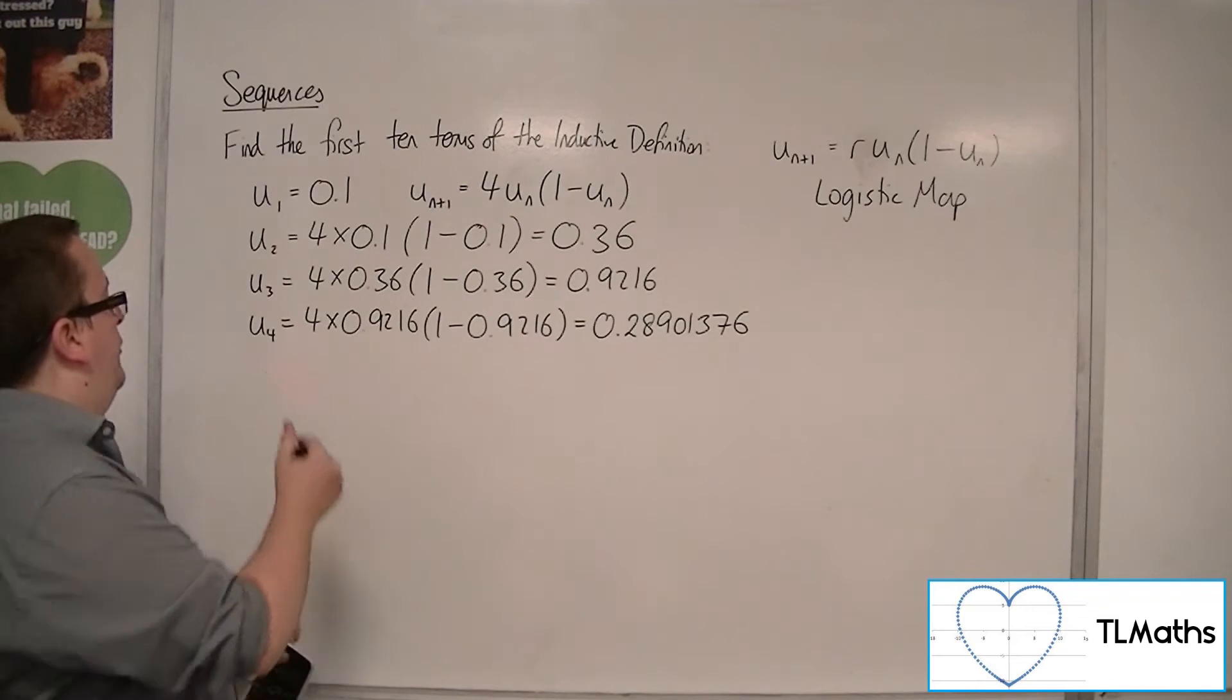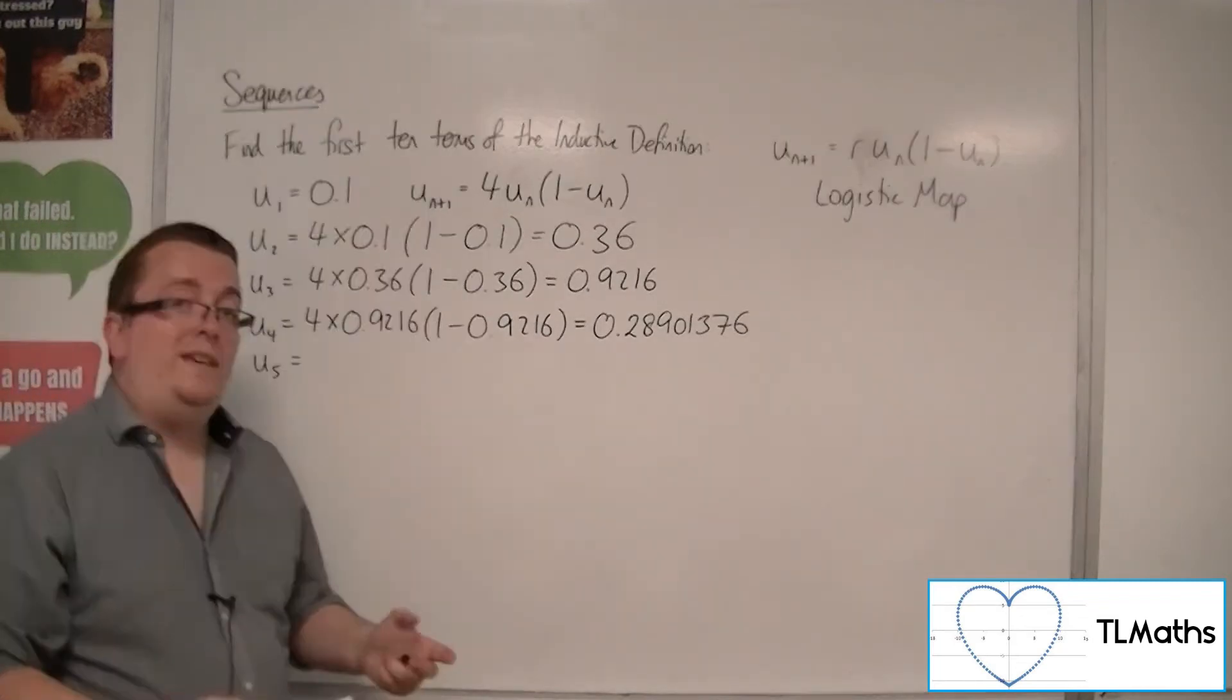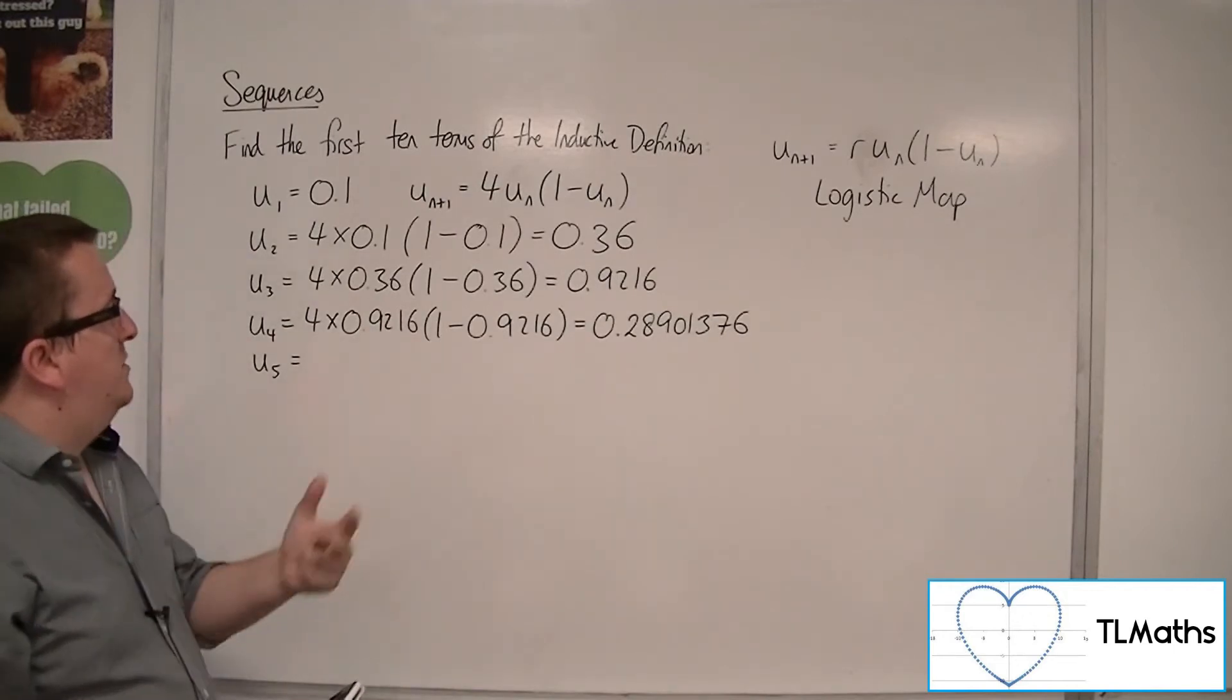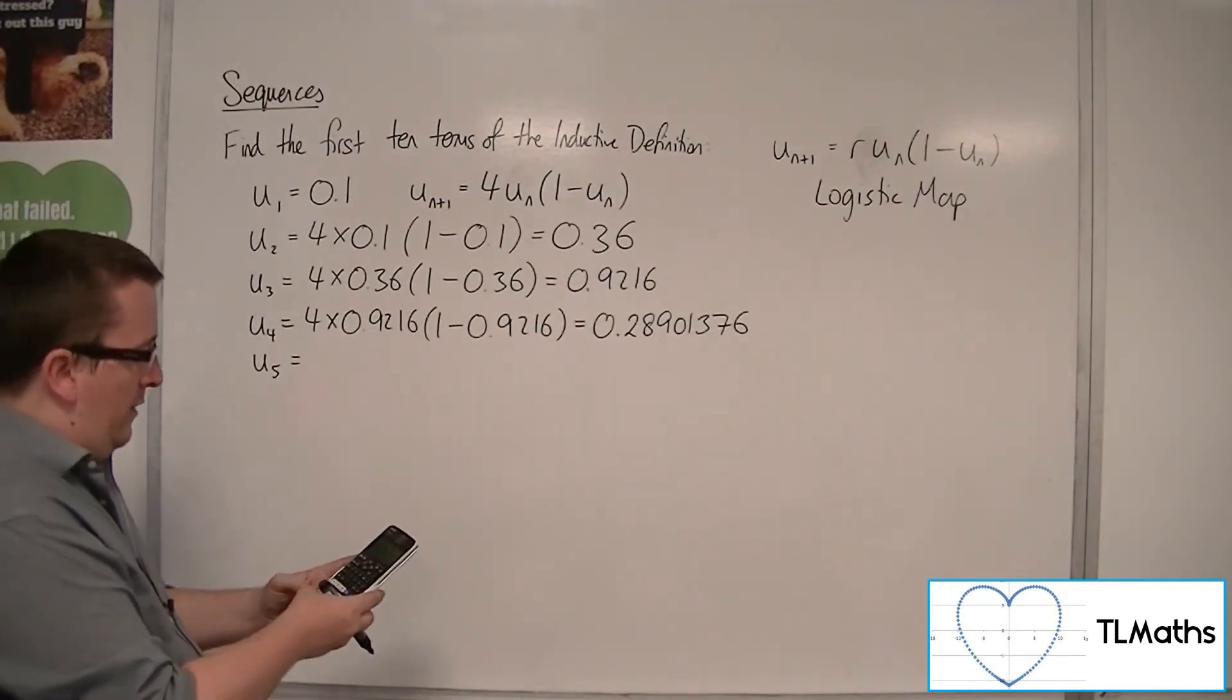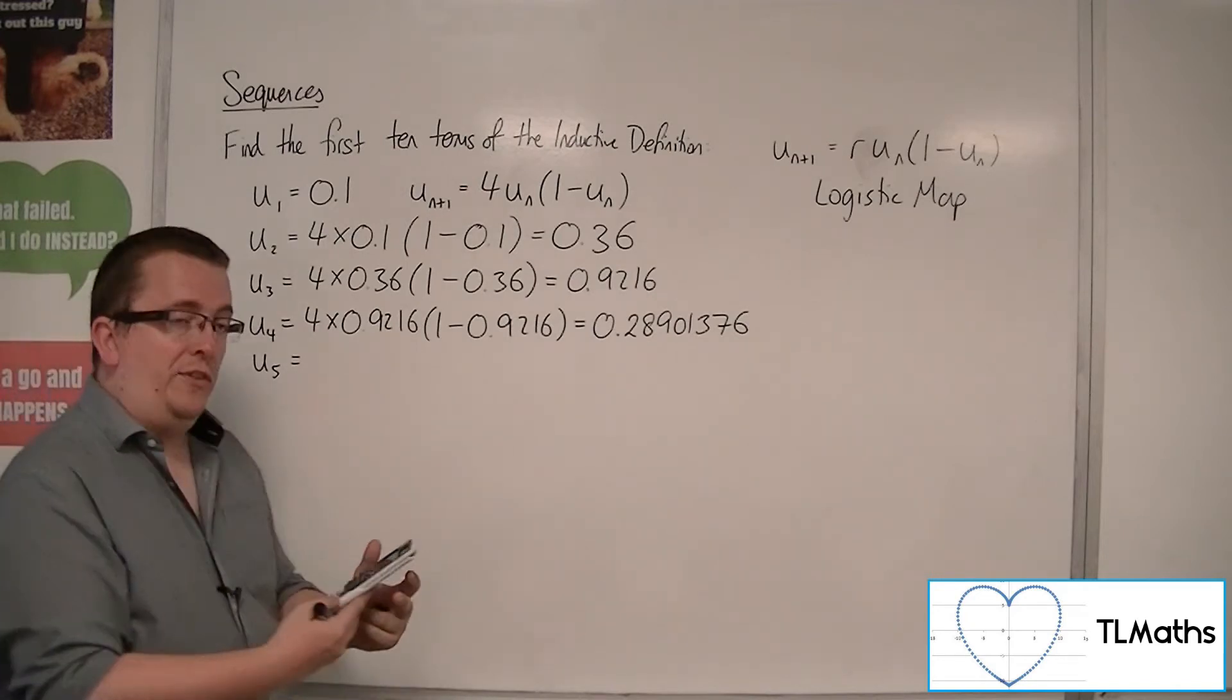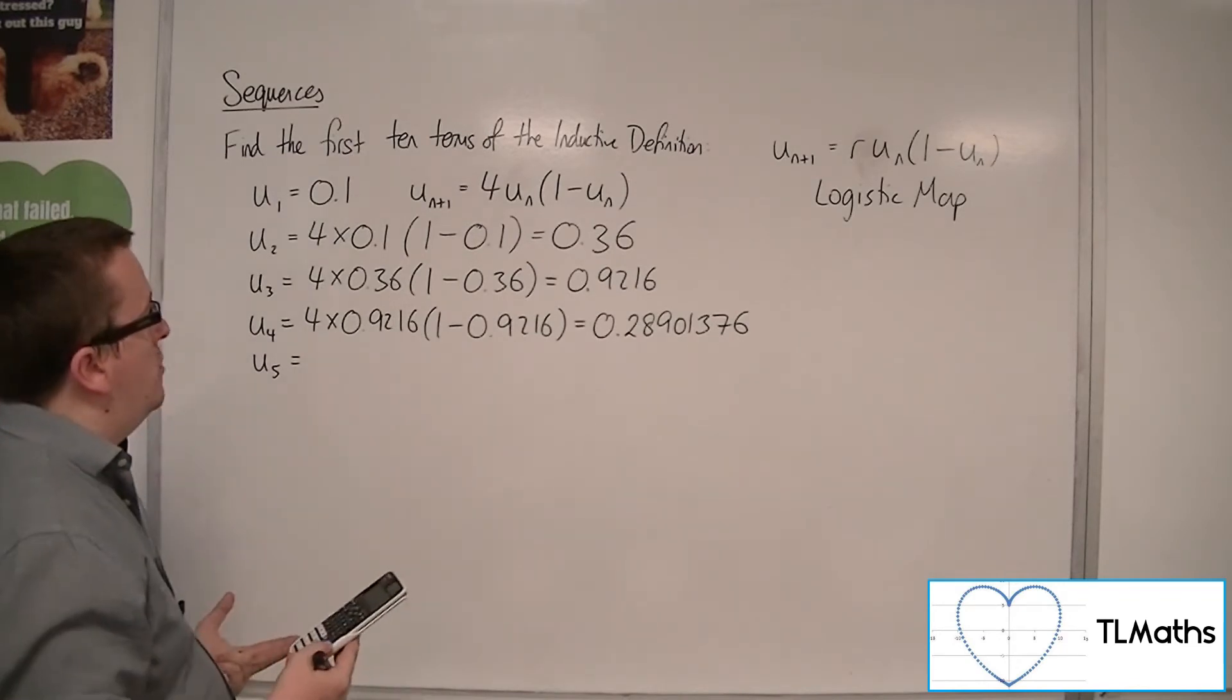Now to speed this process up, one way that you can get around this without having to substitute them in each time is if you press, if you put in your calculator 0.1, then press the equals sign. That stores the 0.1 in the calculator's memory.